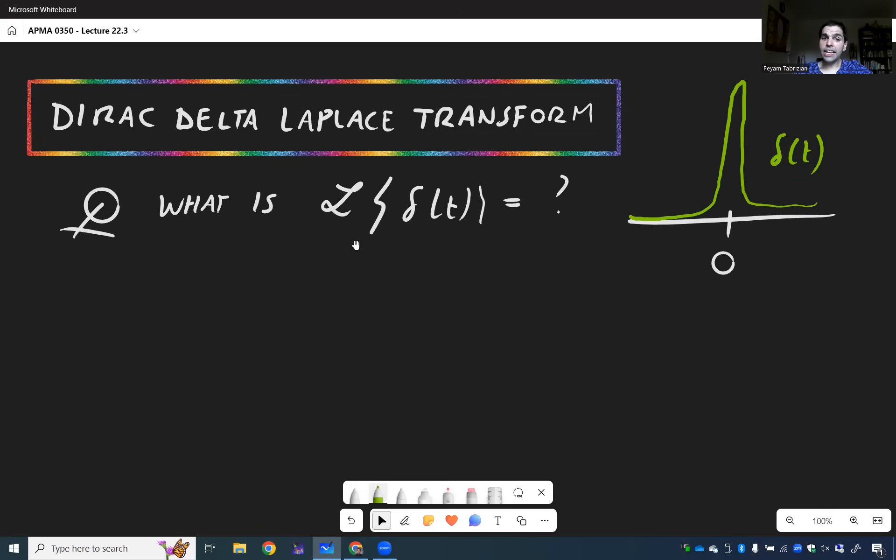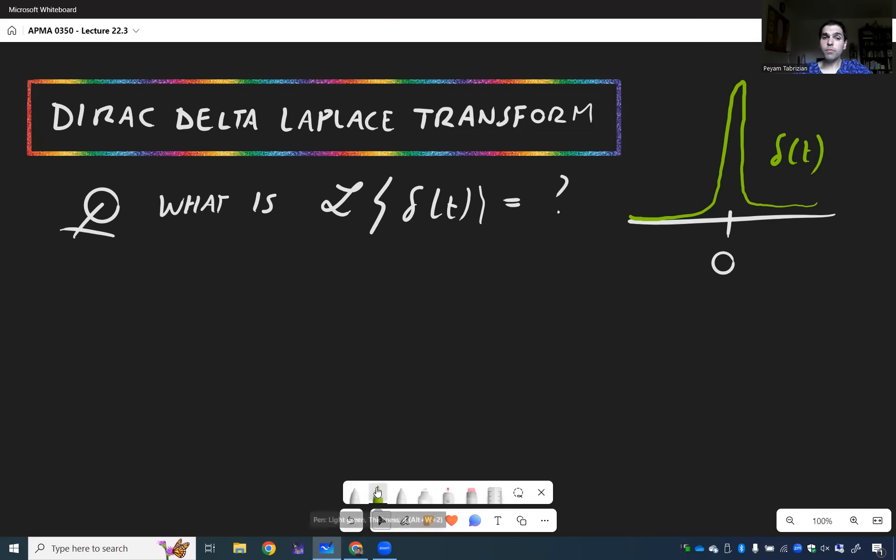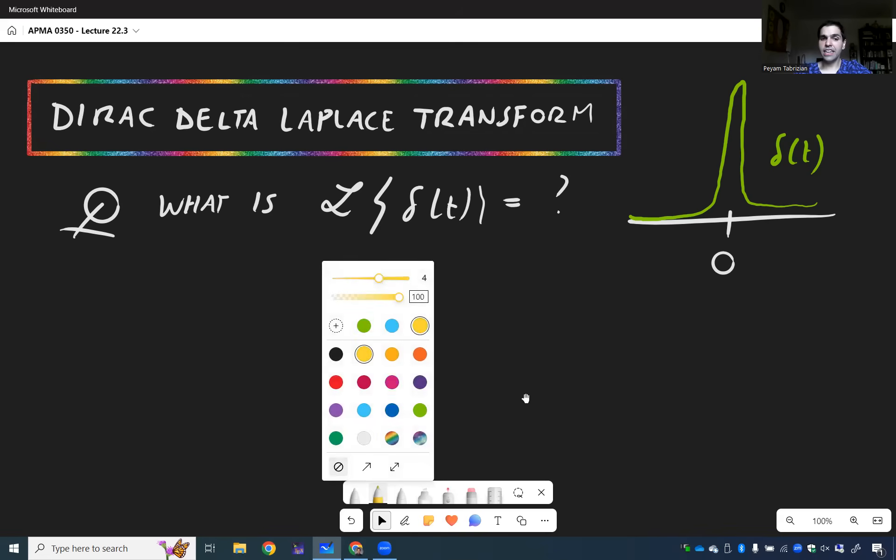And this is related to the most important property of Dirac delta, which I would like to state now. So fact: for any function f(t), let's see what happens when you multiply the Dirac by f and integrate. So we have the following.